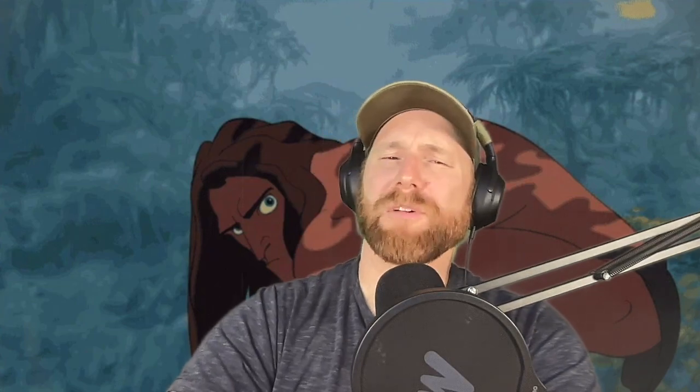The thing that piqued my interest is it's supposed to be a distributed data frames library. They say they're a fast and distributed Python query engine — a framework for ETL, analytics, and ML/AI at scale, with a familiar Python data frame API and built to outperform Spark. When I saw this I thought, oh, another Python data frame, we already have so many of them. But the distributed angle and the Rust foundation got my attention, even though the question remains: why use Daft when we already have Polars?